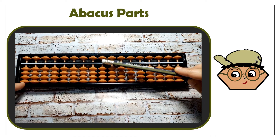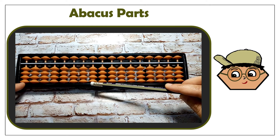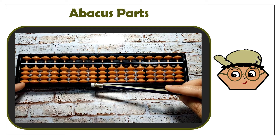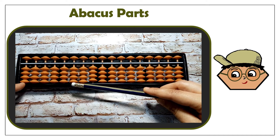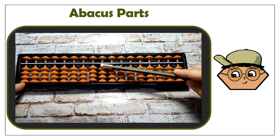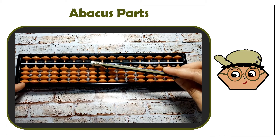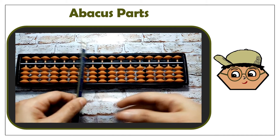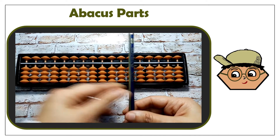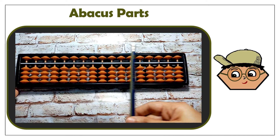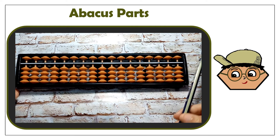The point in the middle of the Abacus signals that this rod is the unit's rod, so it's called the unit point. If this is the unit's rod, the rod to the left of it will be the 10th rod, then the 100th rod, then the 1000th rod, and so on. The rods to the right side are all decimal rods.